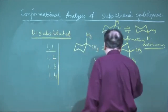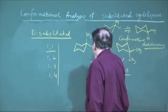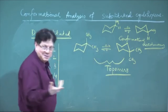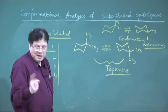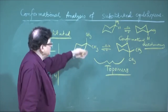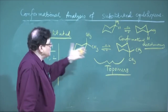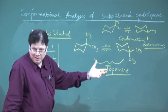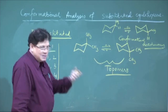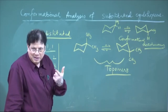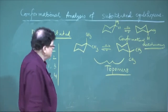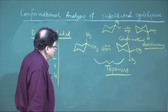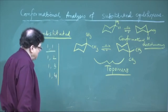For 1,1-dimethylcyclohexane, the two flip forms are topomers and there is no question of which one predominates — it is a single compound.